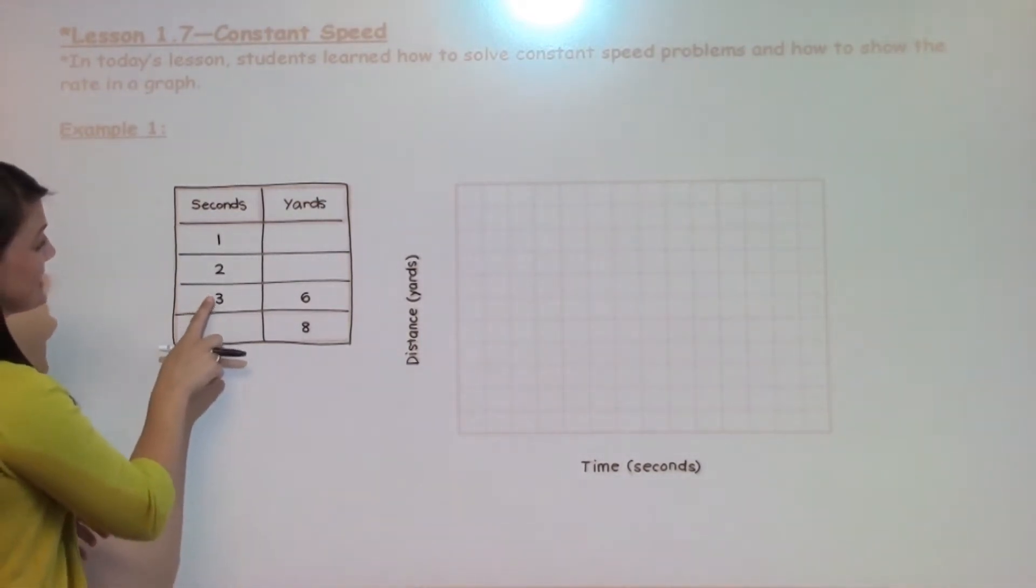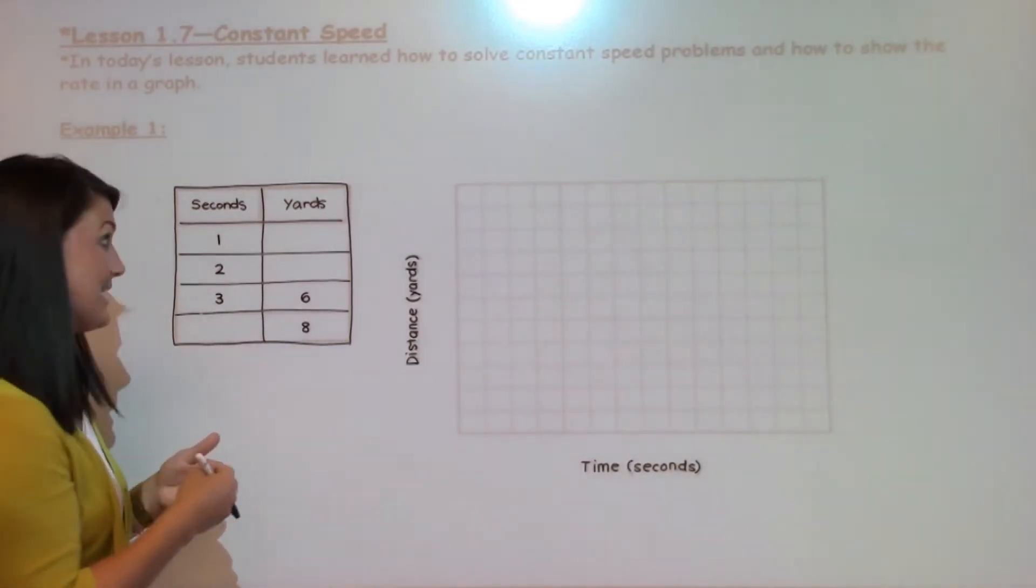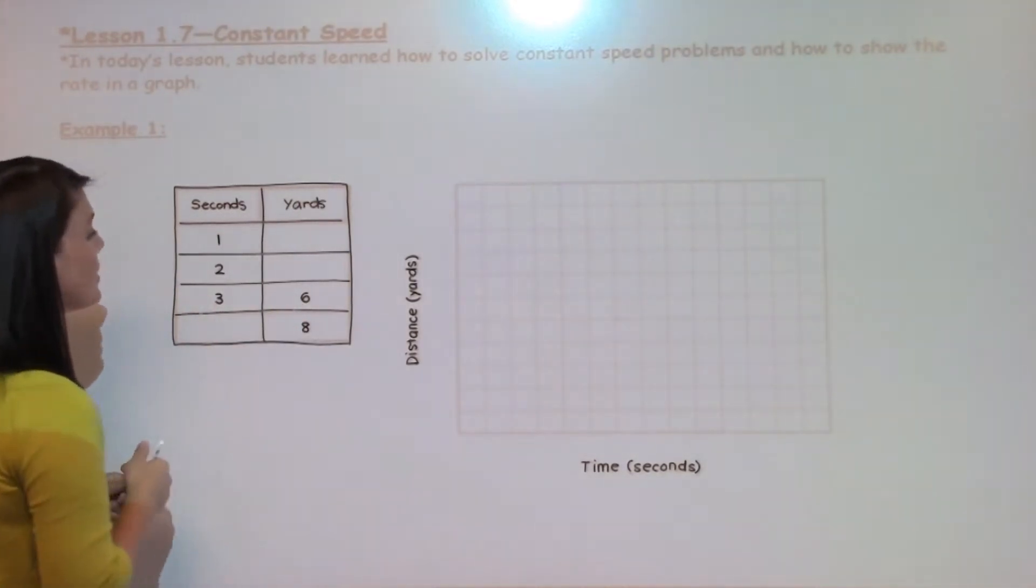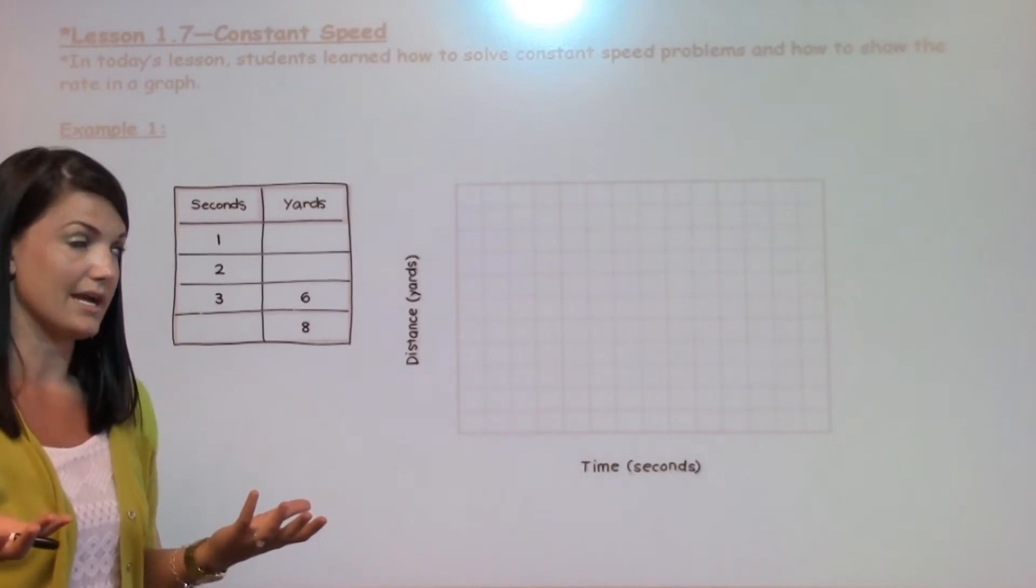I look down and I see that there is nothing connected with 2, but 3 and 6 are connected together. So I know that in 3 seconds, I am able to travel 6 yards. I need to think about what the connection is there.